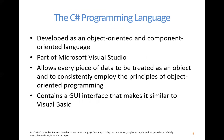C-Sharp in particular was developed as an object-oriented and component-oriented language. It's part of Microsoft Visual Studio and allows every piece of data to be treated as an object, consistently employing the principles of object-oriented programming. It contains a GUI — a graphical user interface — that makes it similar to other languages such as Visual Basic. By the time you go through this class and come back to these principles, you'll really see what it means in practice.